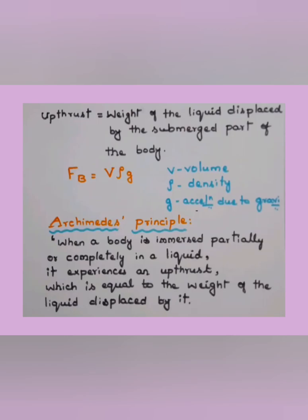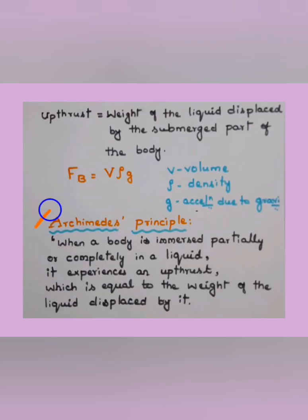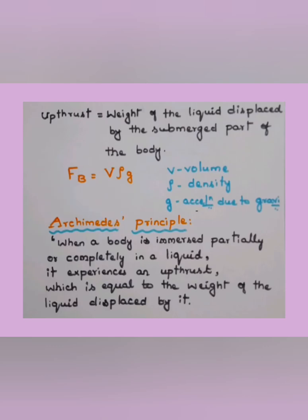We can express upthrust by a formula: upthrust is equal to the weight of the liquid displaced by the submerged part of the body. Mathematically, fb = vρg, where fb is the upthrust or buoyant force, v is volume, ρ is density, and g is the acceleration due to gravity. When a body is immersed in a liquid, it occupies some space that was earlier occupied by the liquid, so the liquid gets displaced.